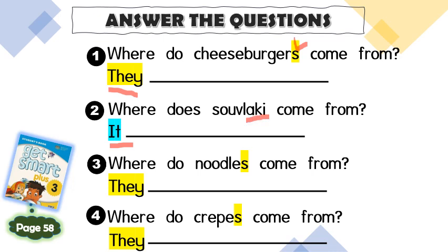So if the subject is singular, what happens to the verb? It come or it comes? I want you to write this in your English exercise book. Answer number one to number four based on the street food that you have read just now.